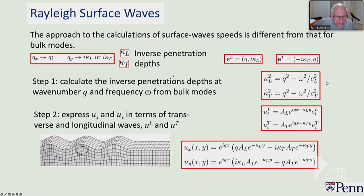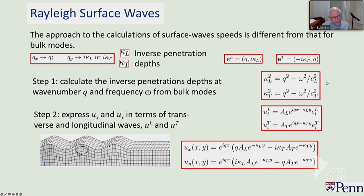A subject usually not taught in graduate school is the Rayleigh surface wave. Here's a depiction of a Rayleigh surface wave for an ocean wave. The particles rotate in ellipsoidal forms all along the system. We have a surface at the top connected to a bulk that controls many things. For an elastic solid, we don't have to worry about gravity effects — it's the two components of the stress tensor that determine this wave. For the elastic case, the stress tensor has to be normal to the surface.